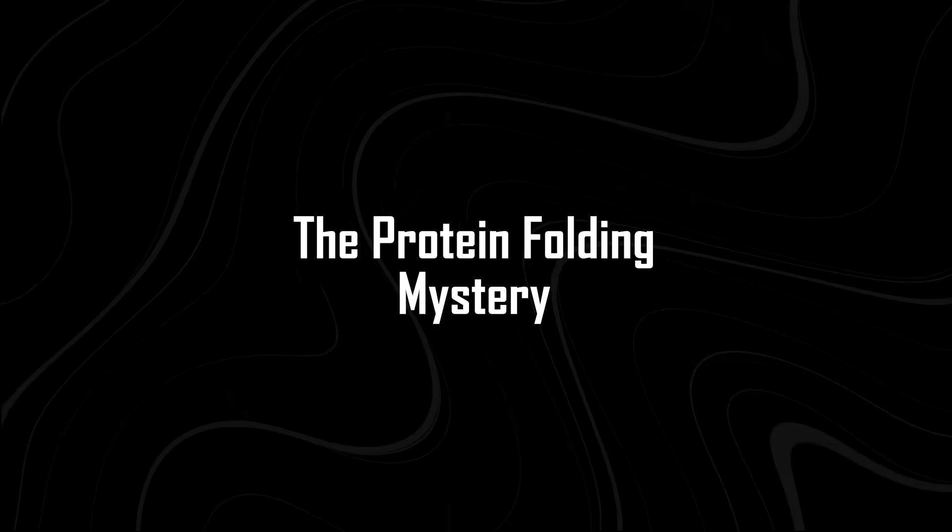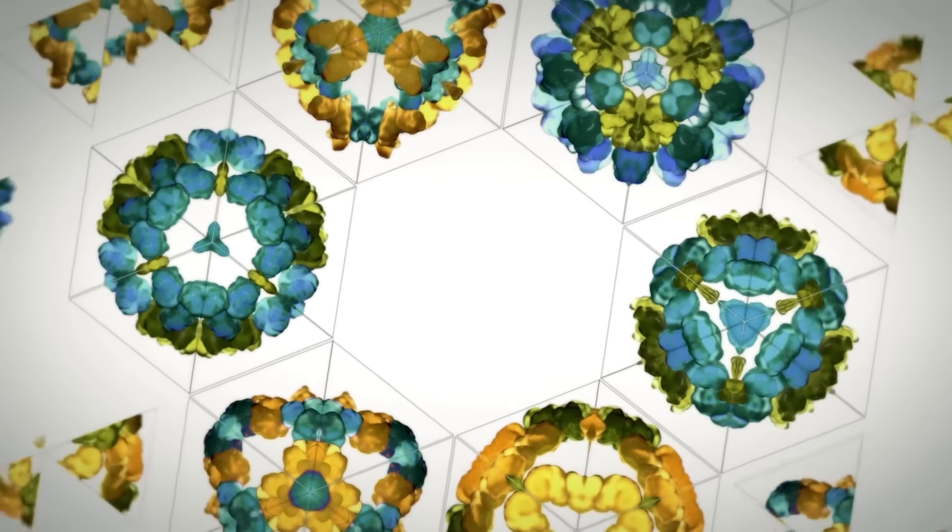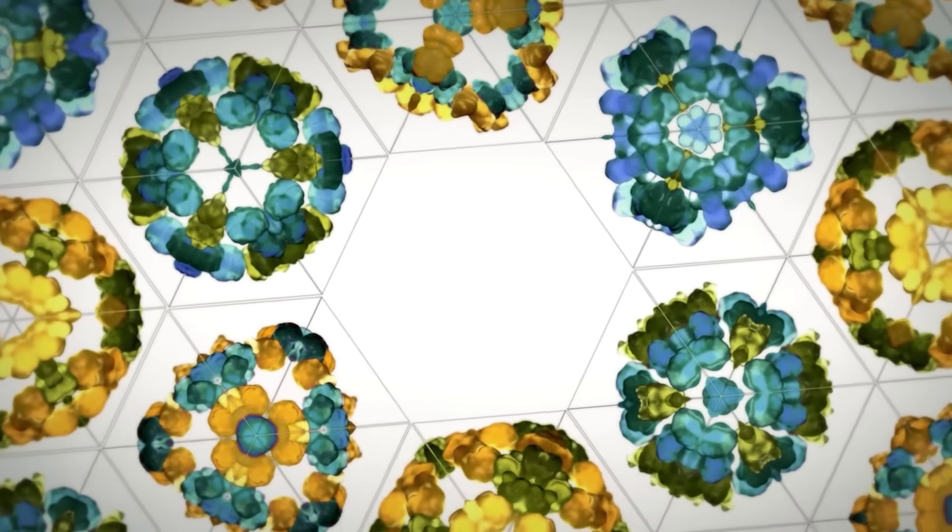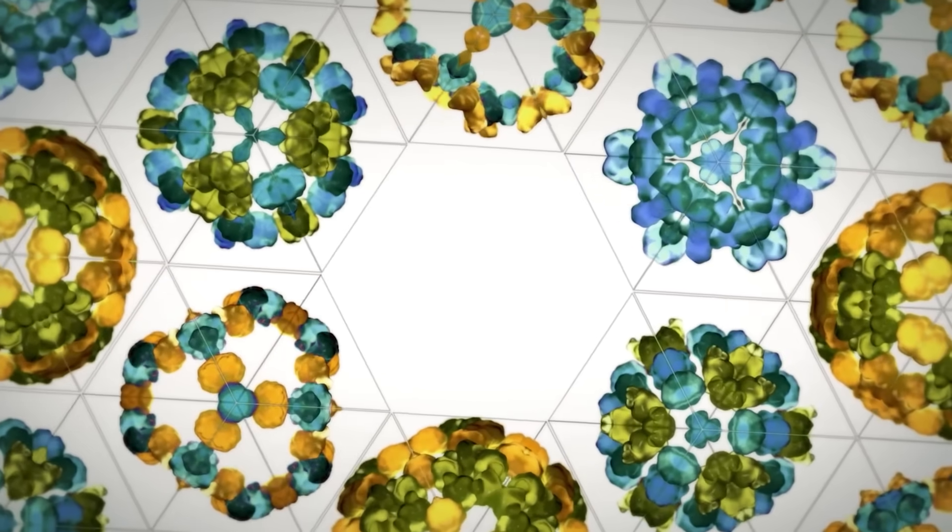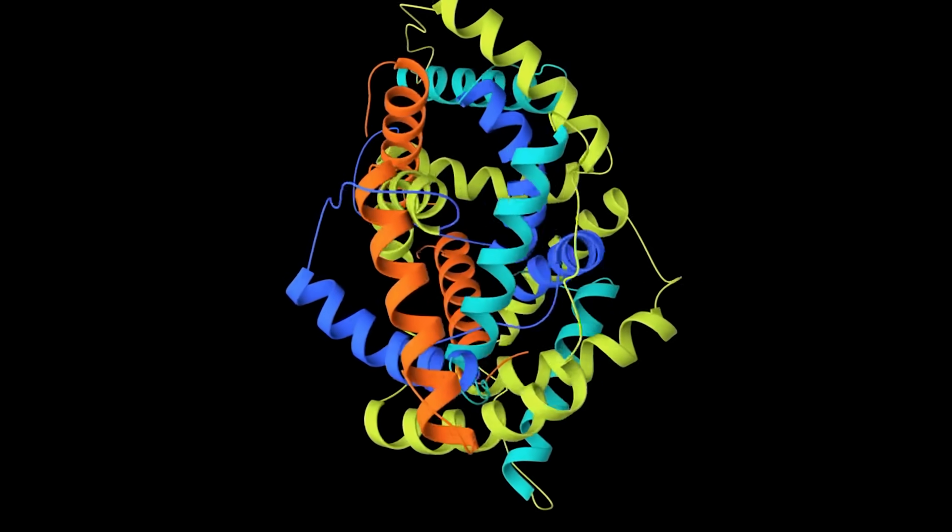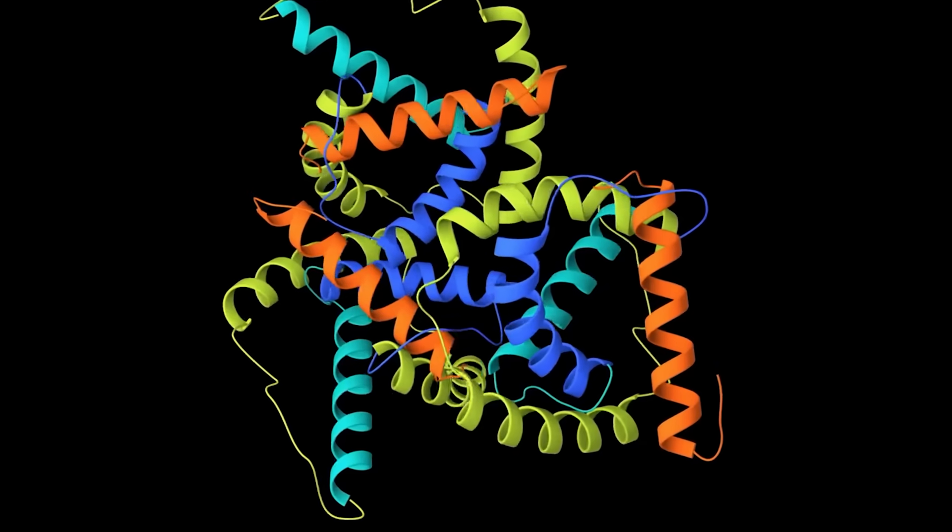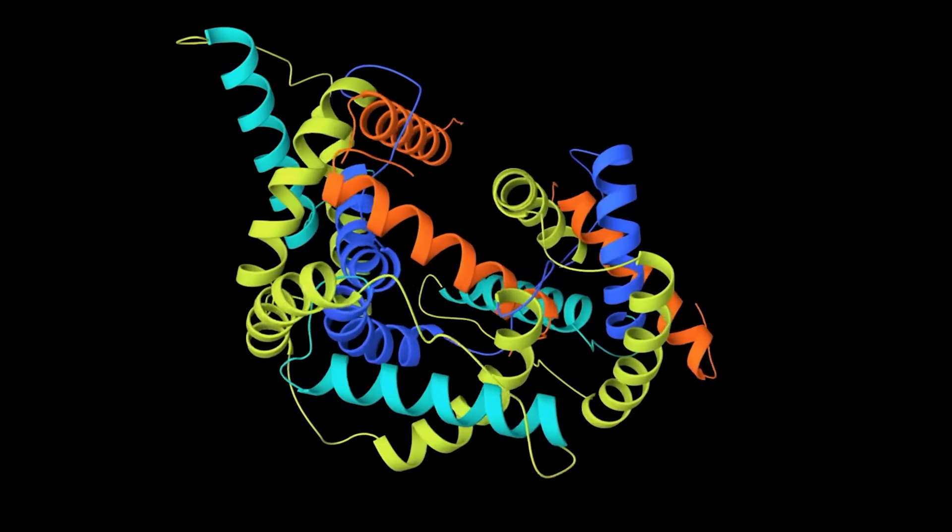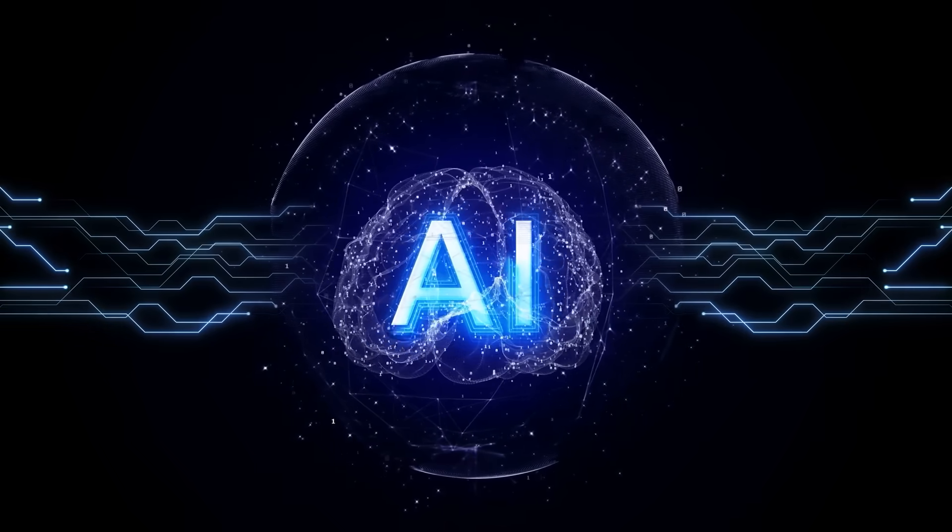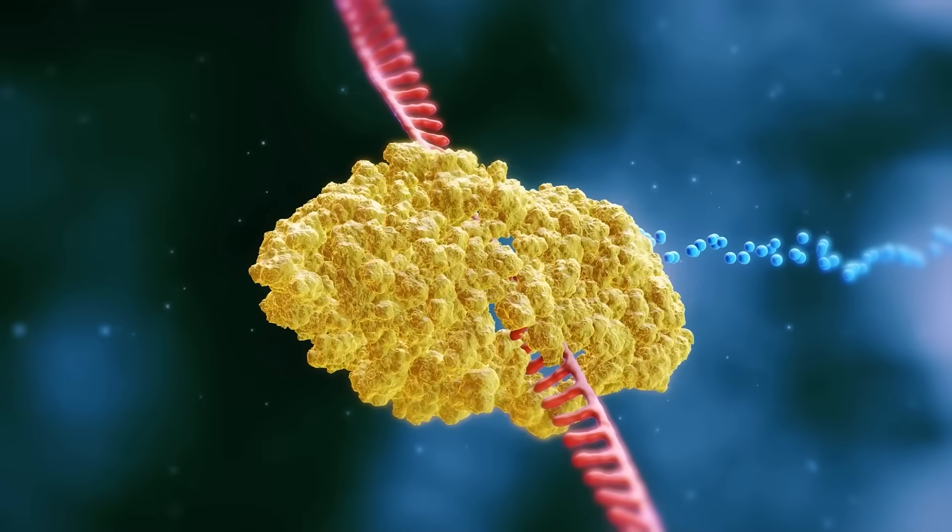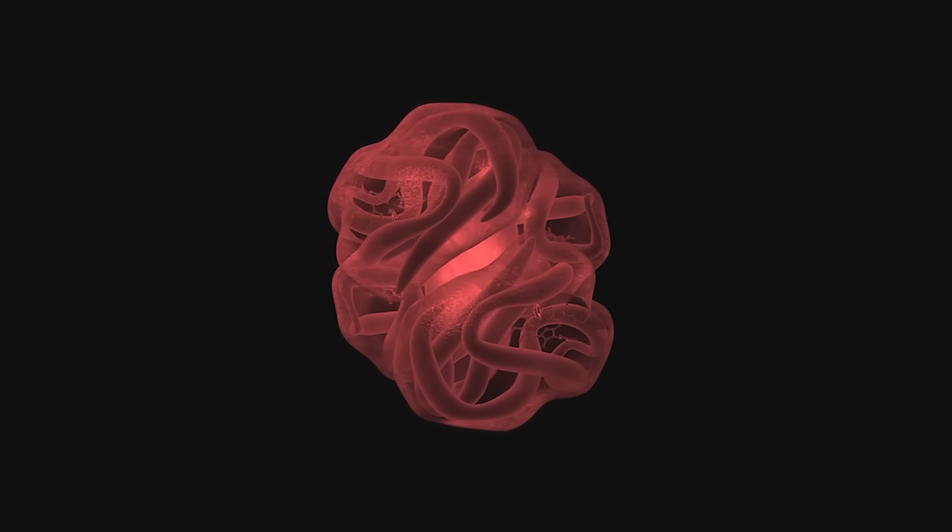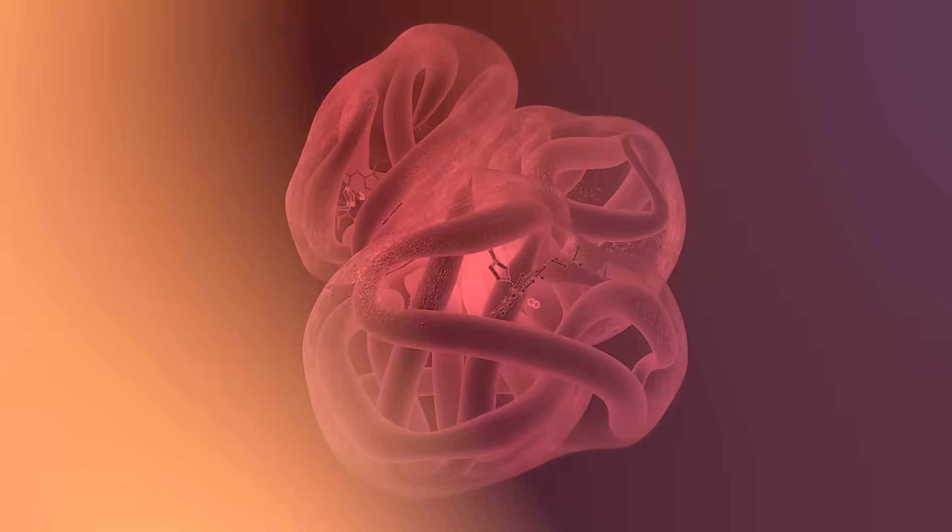The protein folding mystery. For decades, scientists couldn't figure out how a simple chain of amino acids folds into a 3D protein. It was called the protein folding problem, and solving it meant unlocking how diseases work at the molecular level. Then, DeepMind's AlphaFold changed everything. In 2021, it predicted the structure of nearly 200 million proteins, something biologists thought would take a century.